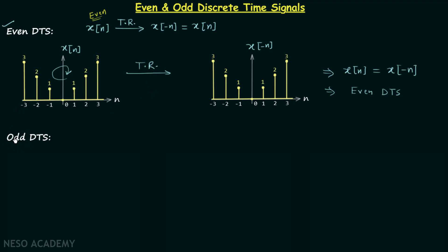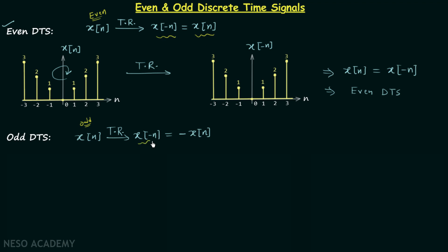Now we will move on to odd discrete time signals. Here also I will take one discrete time signal Xn, perform the time reversal operation, and obtain signal X(-N). Now if X(-N) is equal to the negative of the original signal, then we will say that signal Xn is an odd signal. You can see the difference between the two cases: for even signals X(-N) equals the original signal, but for odd signals X(-N) equals the negative of the original signal.